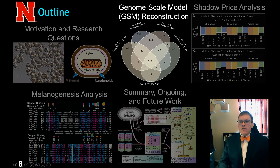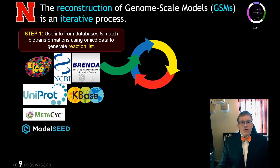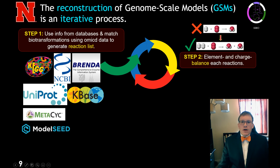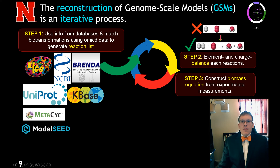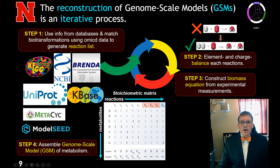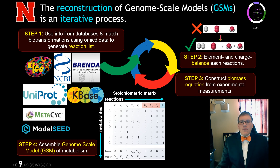We decided to address these research questions through genome-scale model reconstruction. This reconstruction uses information from publicly available databases to create a list of reactions catalyzed by the biological system in question. We ensure those reactions are element and charge balanced and add a pseudo reaction called the biomass equation to simulate organism growth in silico. We put all this together in a stoichiometric matrix with bounds on reaction rates, then analyze it through techniques like flux balance analysis to compare in vivo and in silico behavior.